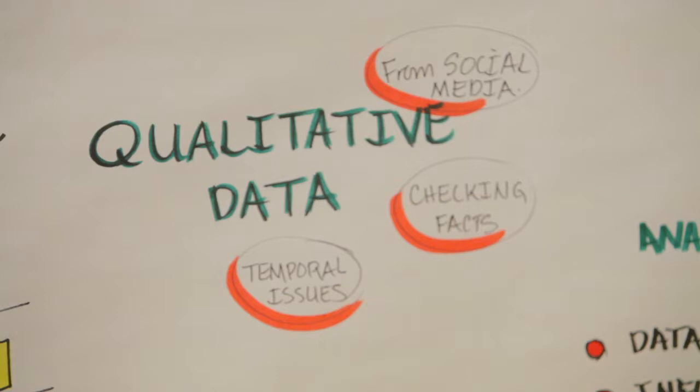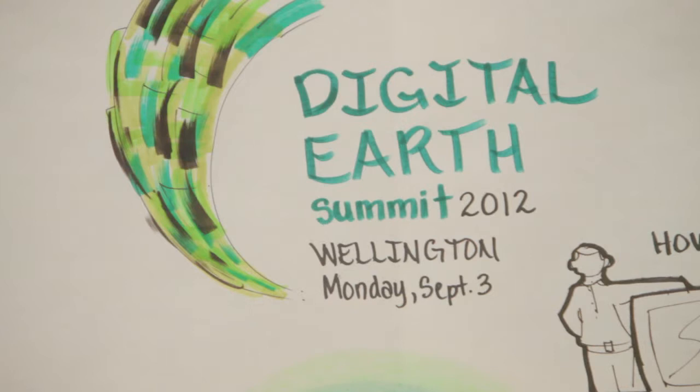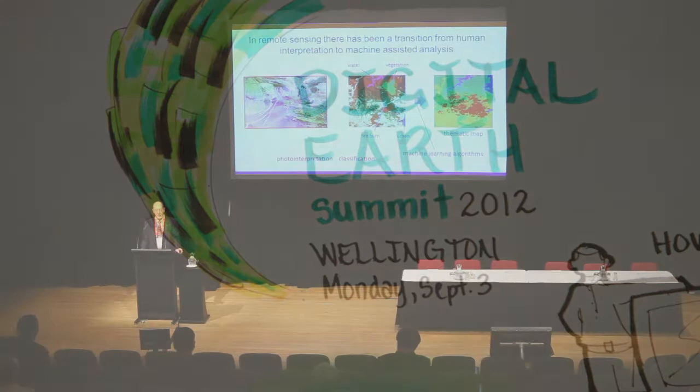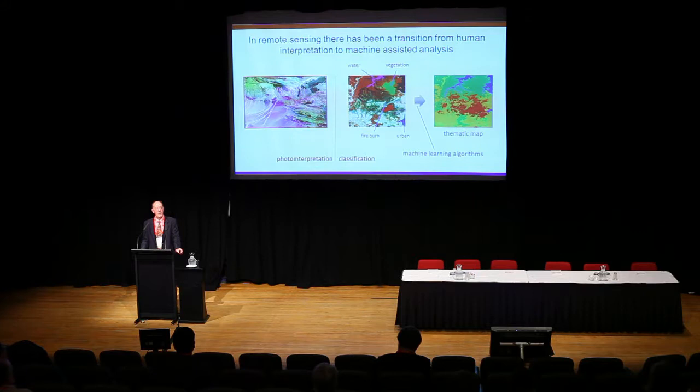The real problem is: how can you make machine-assisted decisions with data that includes social network information - tweets, Facebook information, Flickr data and so on? When we first had remote sensing images, the first way we tried to analyse them was by what we call photo interpretation, using skills developed with aerial photography during the war years. But colleagues largely in the signal processing field worked out that you could apply machine learning techniques to the data and do what we call classification or thematic mapping, where we could get machines to help us create maps from satellite data.